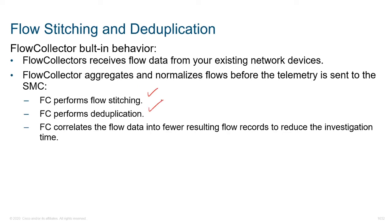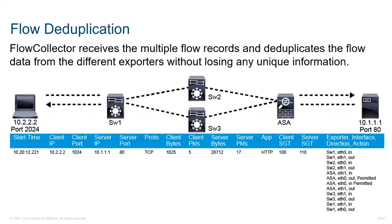In addition to that, we also have deduplication. This looks at what happens if we have multiple flow collectors. If we have traffic that might be coming from one flow record and then another flow record — even though it's one single flow of traffic — we can eliminate duplication. If there is duplicated traffic, we get rid of it, but we're not losing any unique information.